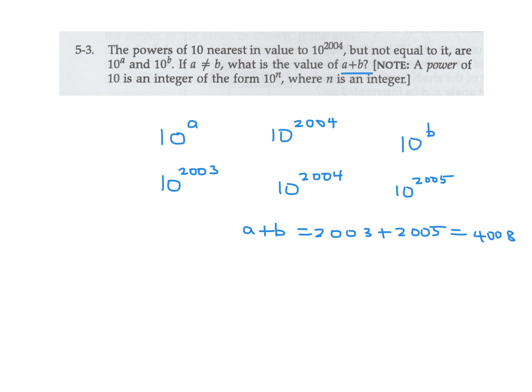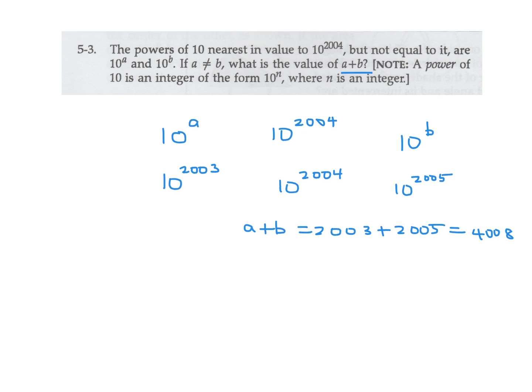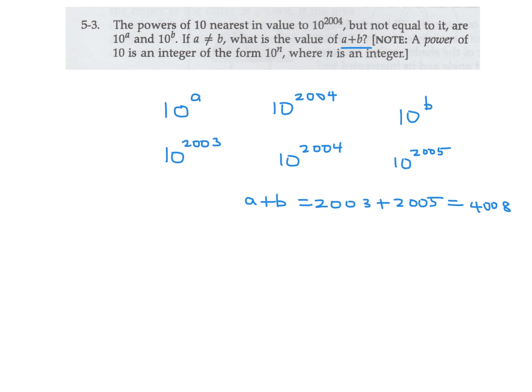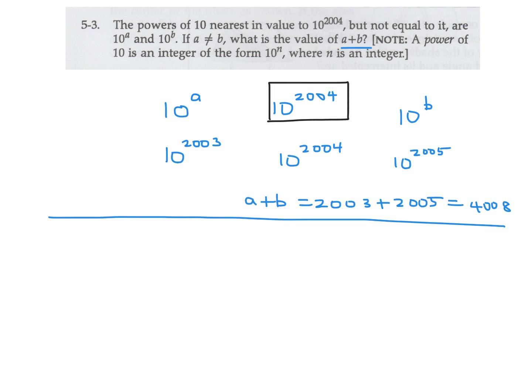So what is the correct answer? I think an easier way of looking at this — these are very large powers, obviously impossible to write them out — is to look at small powers instead. Let's say, instead of this big number, I asked you to compare 10 to the power of 3. 10 to the power of 3 is 1,000. And I asked the exact same question: which two powers of 10 are closest in value?